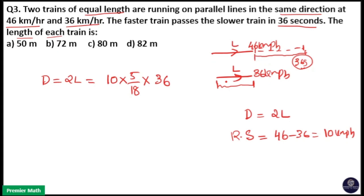In 36 seconds train covered 2L length, and so this is equal to 18 into 2. So that means 100 meter is the distance covered, that is 2L. That means length of each train is 50 meter here. So option A is your answer.